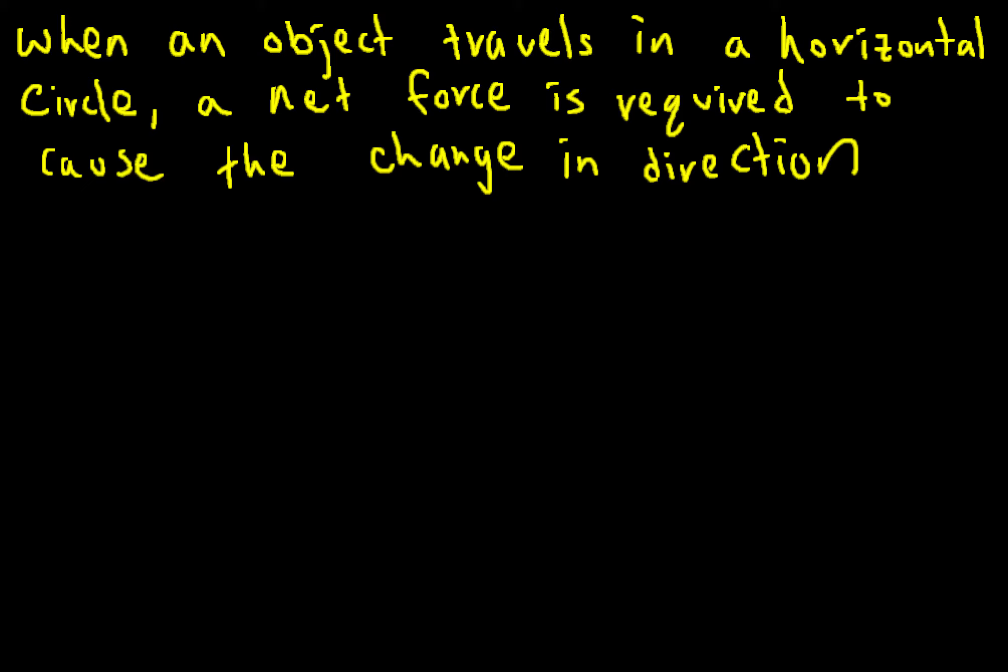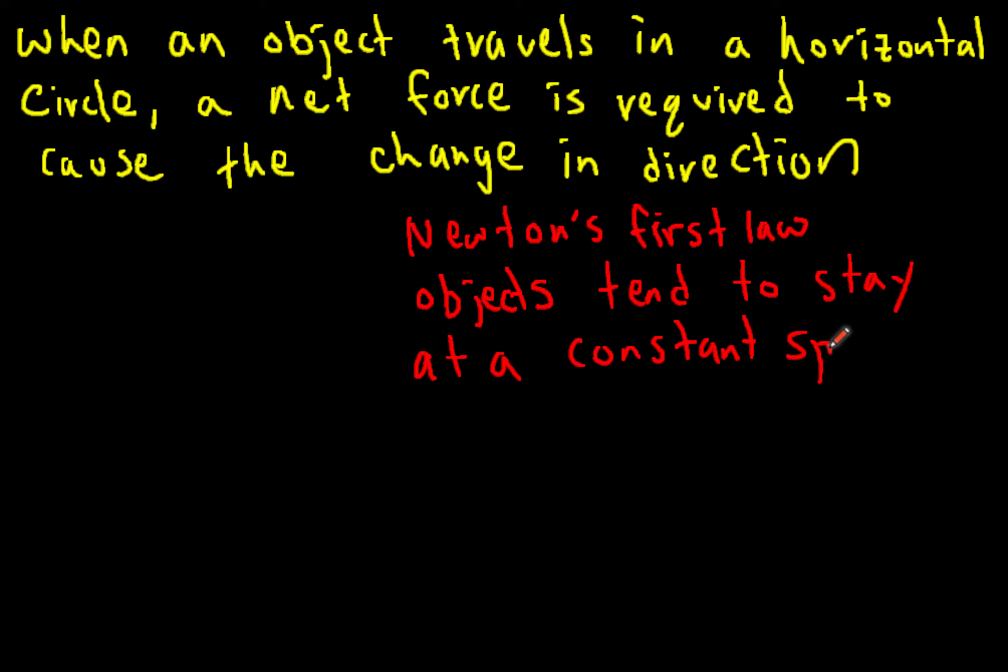The change in direction won't happen unless there's some kind of force changing the motion of the object. This all comes down to Newton's first law. Newton's first law tells us that objects tend to stay at a constant speed traveling in a straight line unless a net force acts on them.